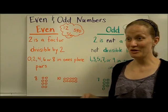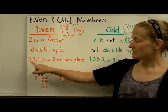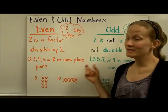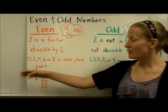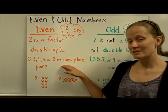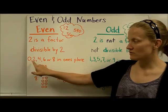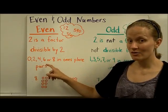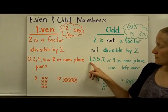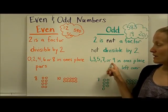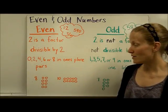A way you probably learned in kindergarten or first grade to recognize an even number is to look at what is in the ones place. It doesn't matter what's in the tens, hundreds, or thousands place. What determines whether a number is even or odd is just the ones place. If you see 0, 2, 4, 6, or 8 in the ones place, it's an even number. If you see 1, 3, 5, 7, or 9 in the ones place, then the number is odd.